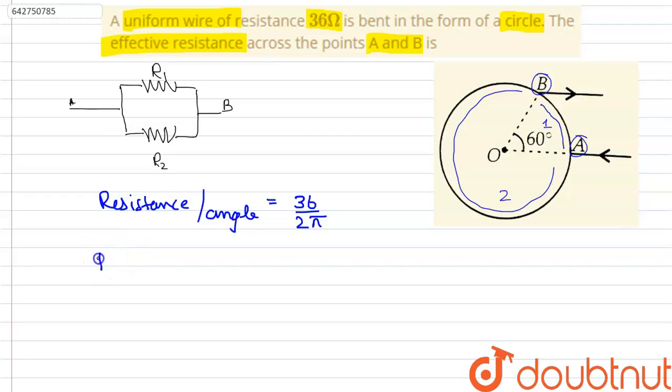Now, to calculate the value of R1, we need to multiply this ratio with this angle. Therefore, 36 by 2π multiplied by π by 3.